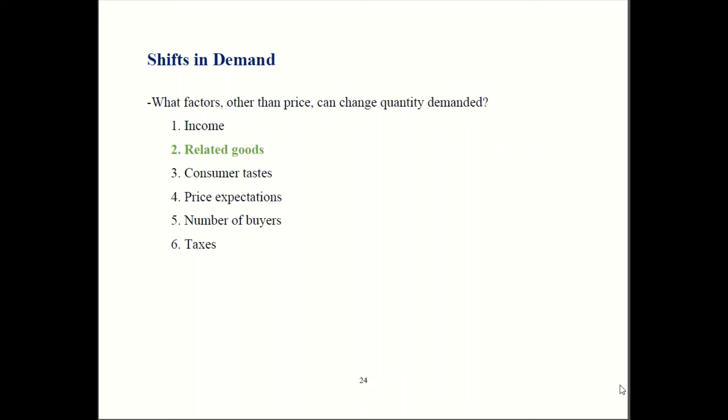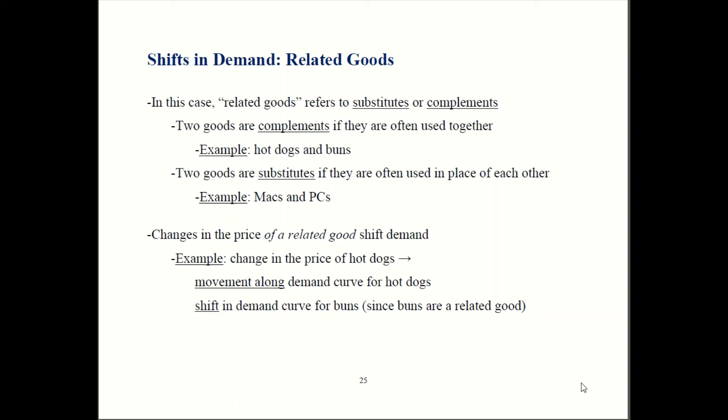Income can shift demand. Another thing that can shift demand is what we call related goods, and there are two kinds of related goods. Related goods can be either substitutes or complements. We say goods are complements if you tend to buy them together. Things like hot dogs and hot dog buns are complements. Buying buns without buying a hot dog doesn't make a lot of sense, and so does buying hot dogs without a bun. So you get them together.